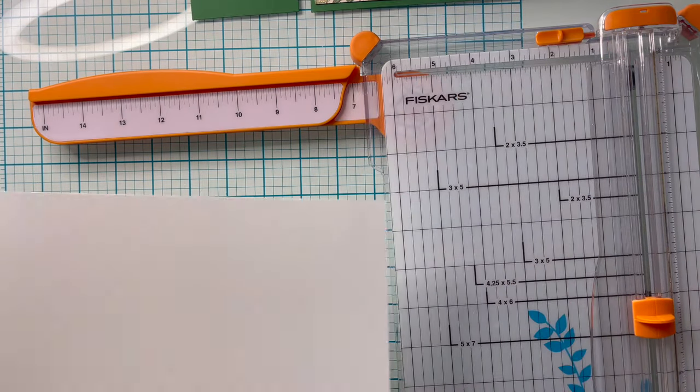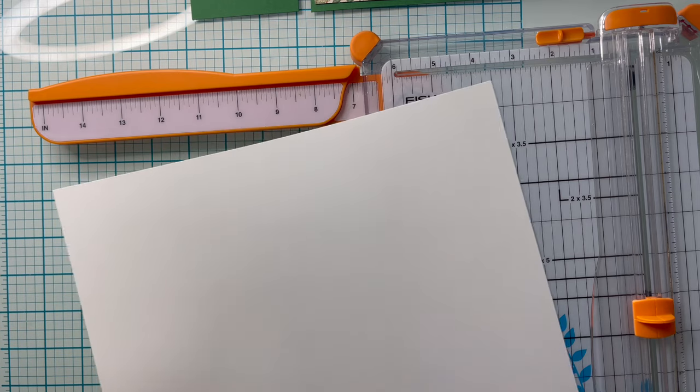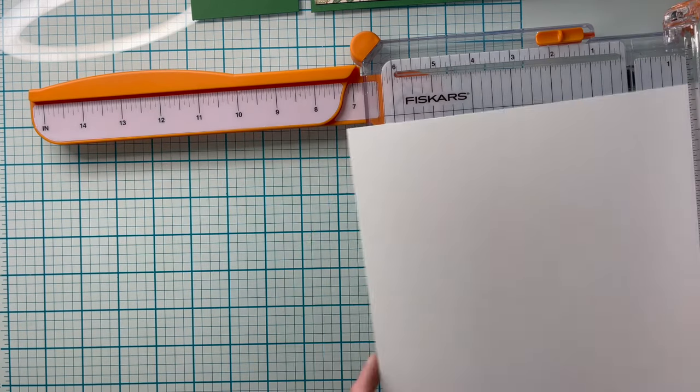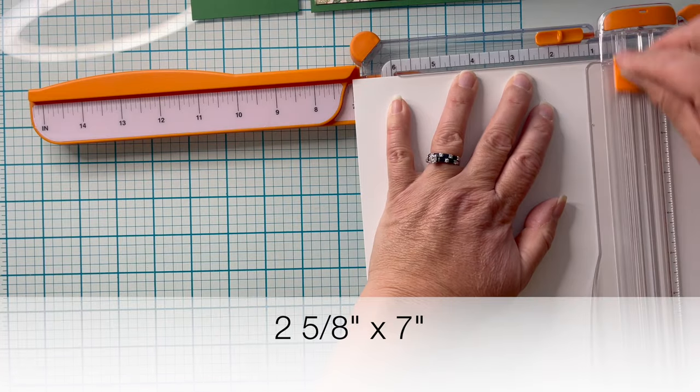Now the final cut is going to be your neutral color card. I'm using white, but this one's going to be cut at 2 and 5/8 inches by 7 inches.